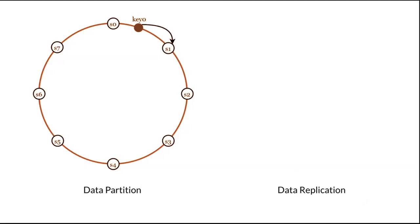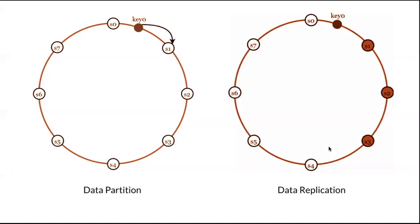Now we can talk about data replication. To achieve high availability and reliability, data must be replicated asynchronously across N servers, where N is a configurable parameter. These N servers are chosen using the following logic: after a key is mapped to a position on the hash ring, we walk clockwise from that position and choose the first N servers on the ring to store data copies. For example, if key0 is mapped to S1, we go clockwise and make replicas of key0 on S2 and S3 as well, so all three servers have a replica of key0.